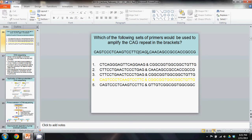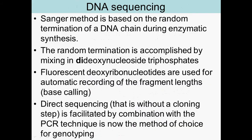This video is about DNA sequencing. There is the Sanger method, which is based on the random termination of DNA due to dideoxynucleotides. The random termination is accomplished by dideoxynucleotide triphosphates, and fluorescent deoxyribonucleotides are used for automatic recording of the fragment length. Then there is direct sequencing, where you just let it run through the gel and don't have to worry about the smaller ones running out. That's much faster.